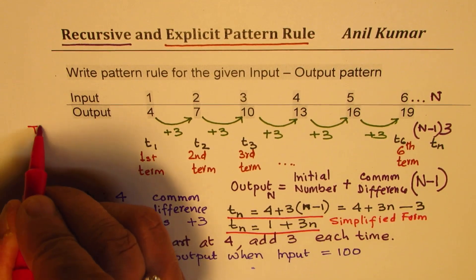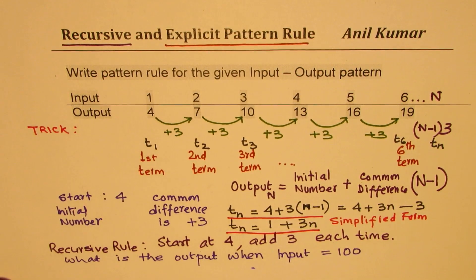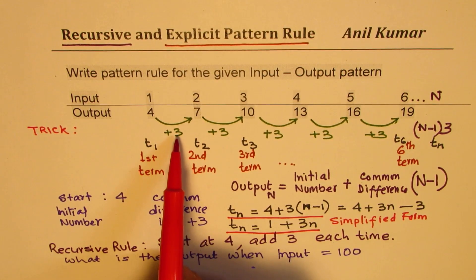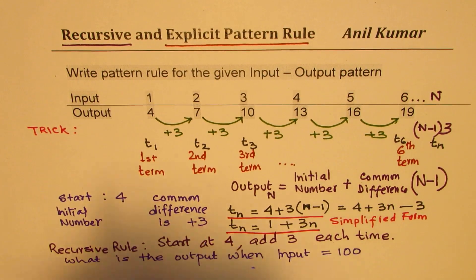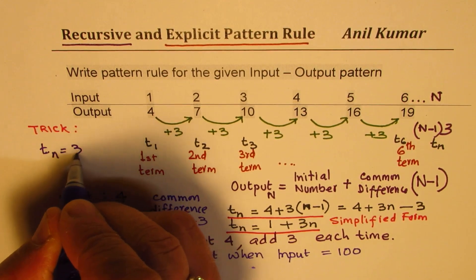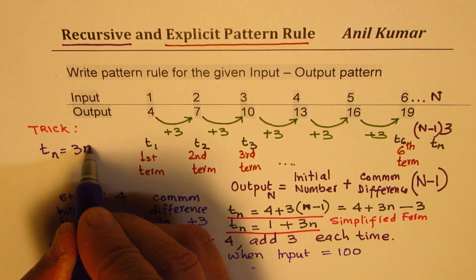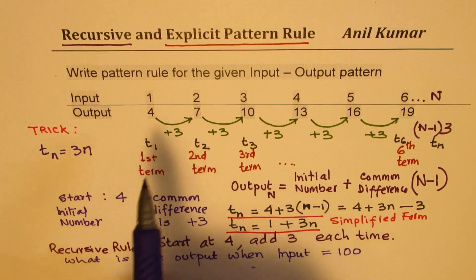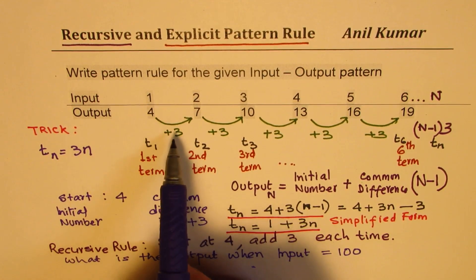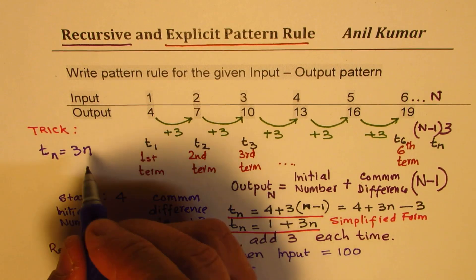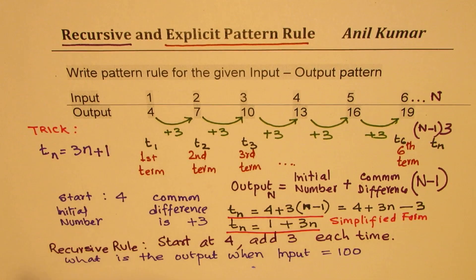Here is the trick. What is the common difference? The common difference is 3. So to get the general term, which we are saying tn, we will write 3 times n for sure, since I'm adding 3. So for the first term, 3 times 1 is how much? 3. How do I get 4? By adding 1. Do you see that?